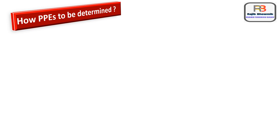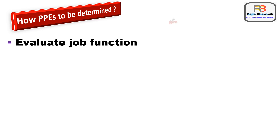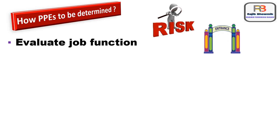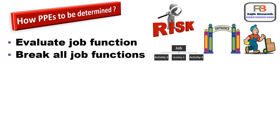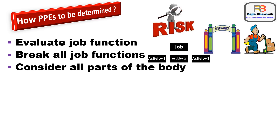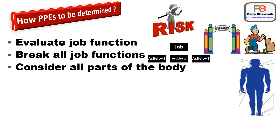Now let us understand how PPE is to be determined. Evaluate every job function starting from entering through the gate to dispatch. In-transit safety also to be considered for associated people of the organization. Break all job functions into sub-activities and determine all hazards present in each activity. Check for hazards to all parts of the body.